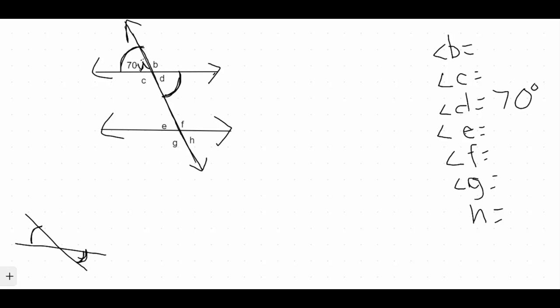A would match up with E, B would match up with F, C would match up with G, and D would match up with H. And what we know about corresponding angles is that corresponding angles are also congruent. They equal each other.